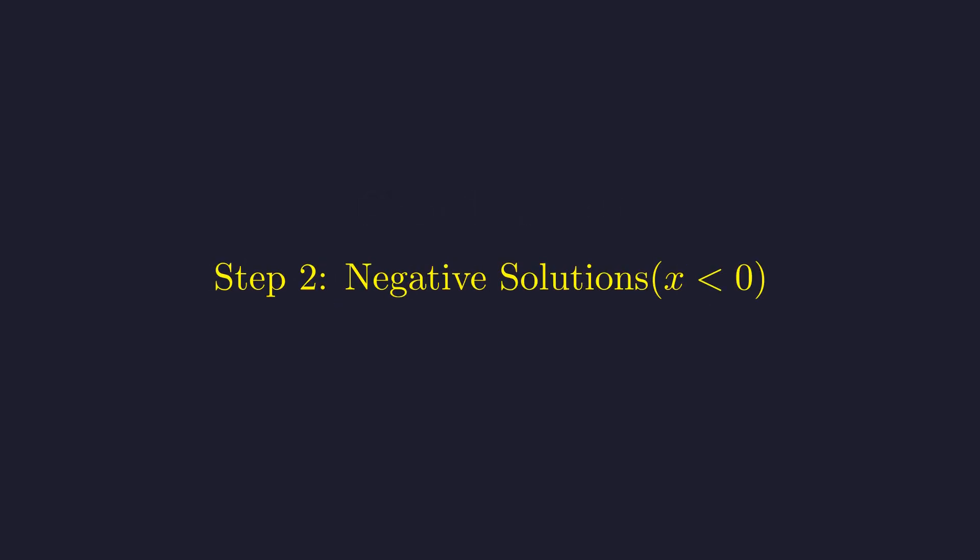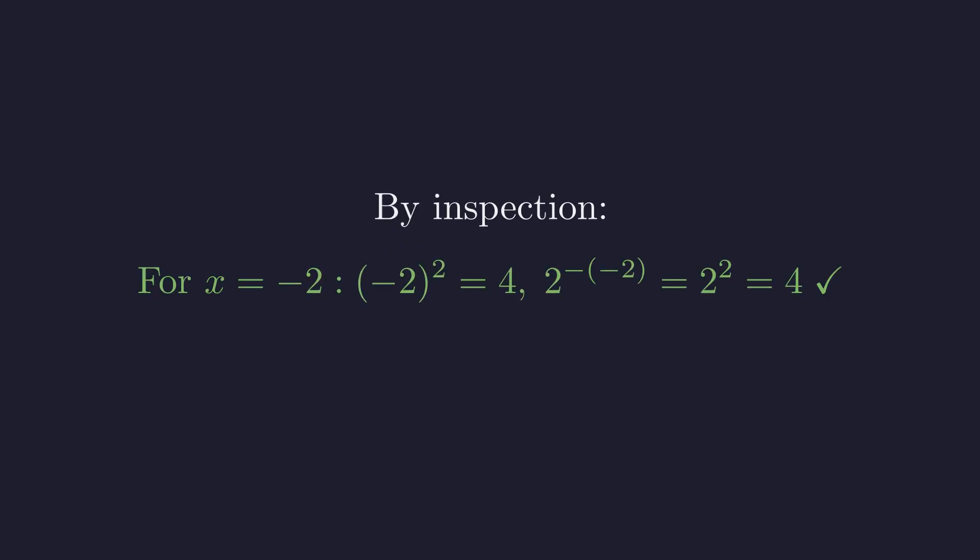We will now analyze the negative domain, where our graphical analysis suggested two solutions exist. First, we verify the integer solutions identified from the graph. At x equals negative 2, both sides evaluate to 4, confirming it is a solution.